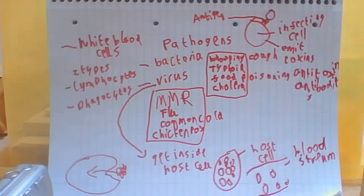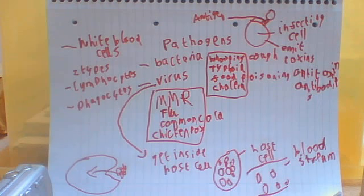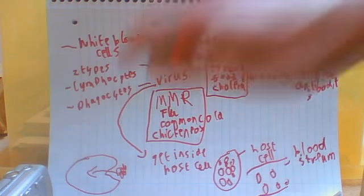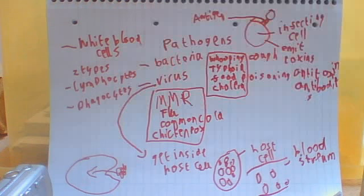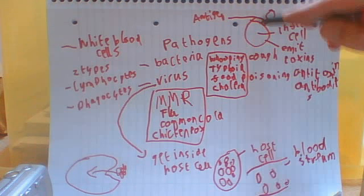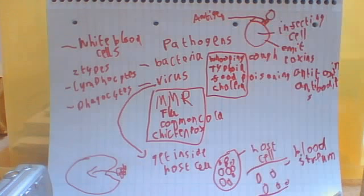So that explains pretty much how disease works inside the body. You need to be aware that every type of lymphocyte has particular antibodies, and there's only one type that's complementary to the particular antigen on a given foreign cell.